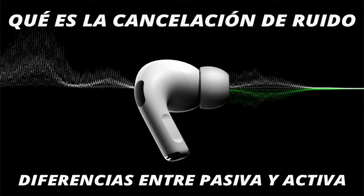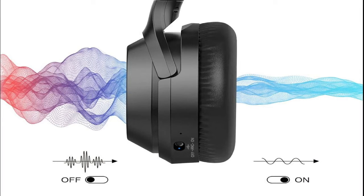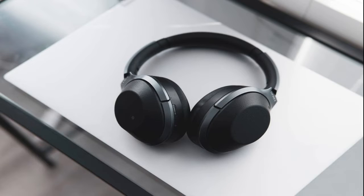In today's video we are going to learn what noise cancellation is and the differences between passive and active noise cancellation. Before everything, let's make clear what external noise cancellation is, especially in this case focused towards headphones. External noise cancellation is what allows us to reduce unwanted sound from the outside while enjoying the audio signal we are really interested in.